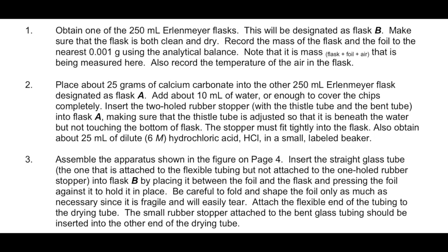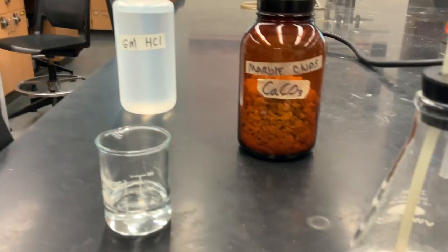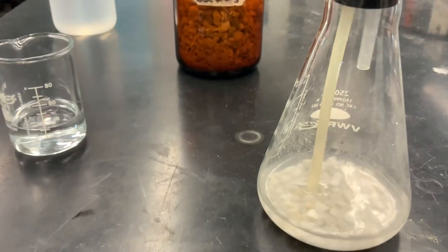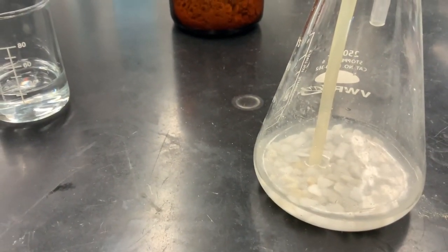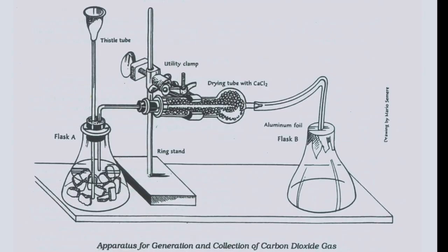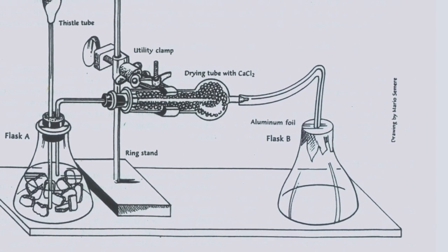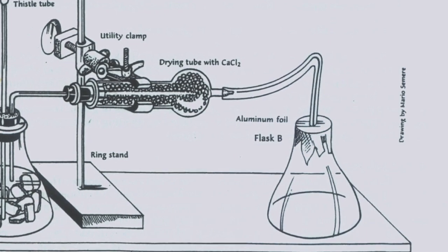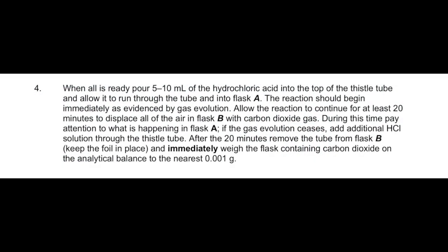Next we will set up flask A by placing a sufficient amount of calcium carbonate — around 25 grams — into the flask along with some water. Then we make sure that the thistle tube is placed properly so that the acid is delivered straight down onto the calcium carbonate chips without any escape of bubbles up into the thistle tube. All of the gas will exit out of the tube on the right side, go through the drying tube where moisture will be removed, and then be collected inside flask B, pushing out the air that was in the flask to begin with.